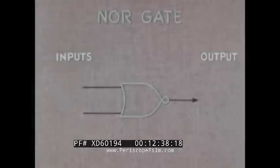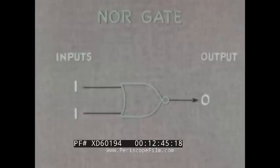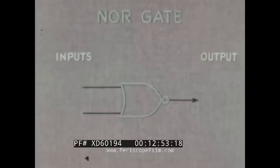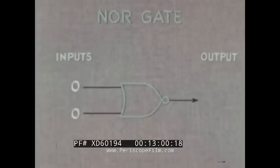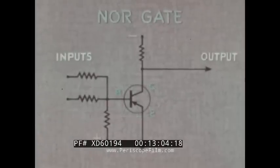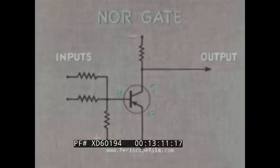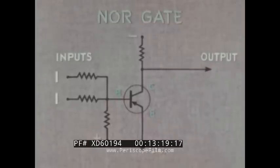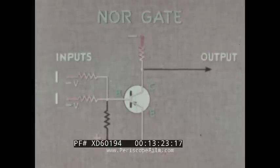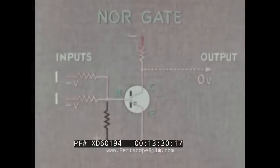Now let us turn to the NOR gate. When the inputs are ones, the output is zero. A one and a zero also result in zero output. Only when both inputs are zero will there be an output. The NOR circuit resembles the inverter but accommodates two inputs; the values of the resistors determine the circuit's responses to inputs. When both inputs are binary ones — negative voltages in this case — base and collector currents flow and output drops to zero volts. Thus, one inputs give a zero output.